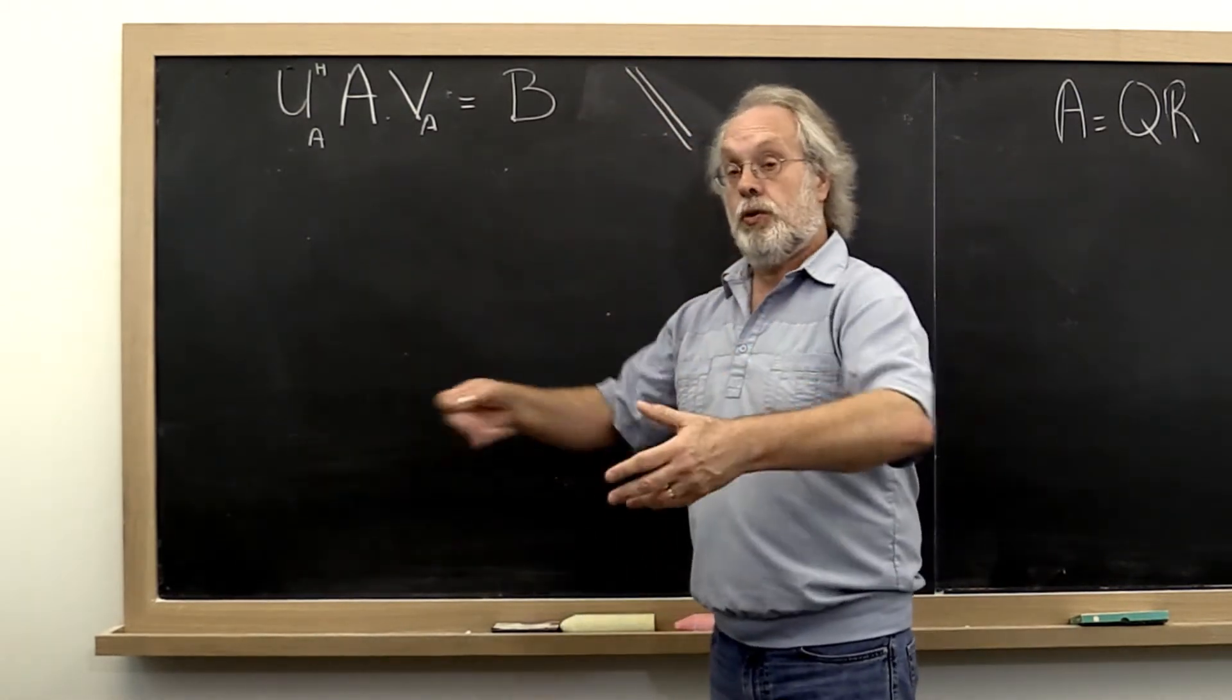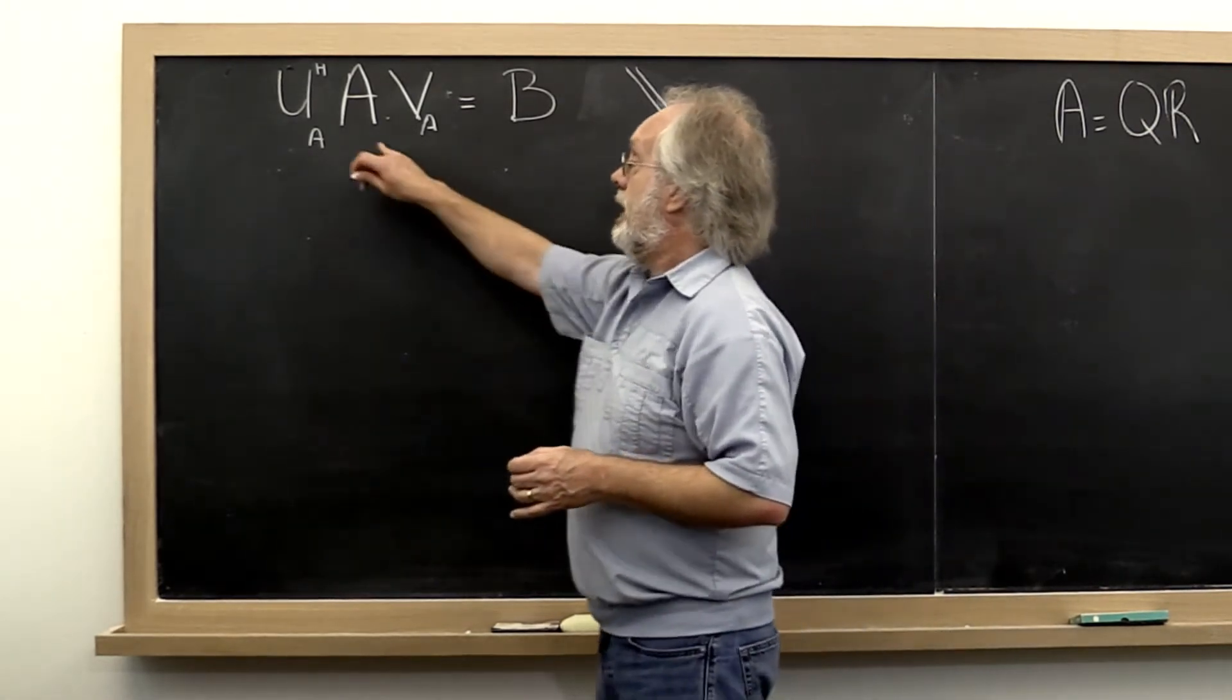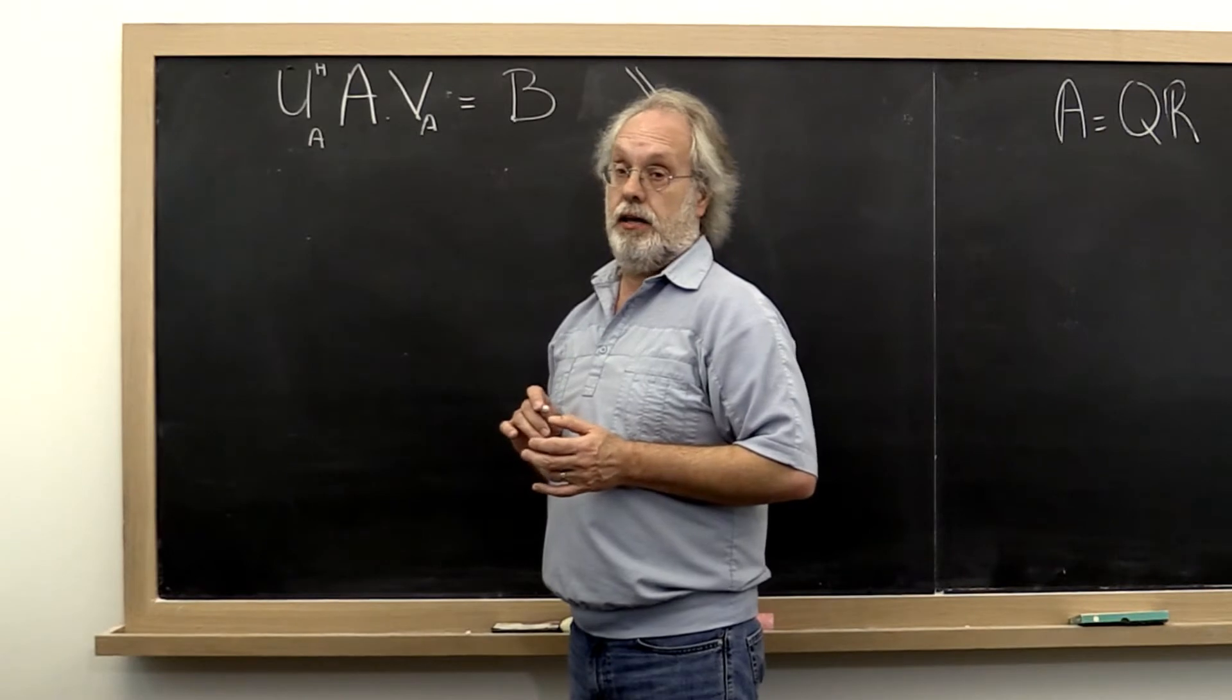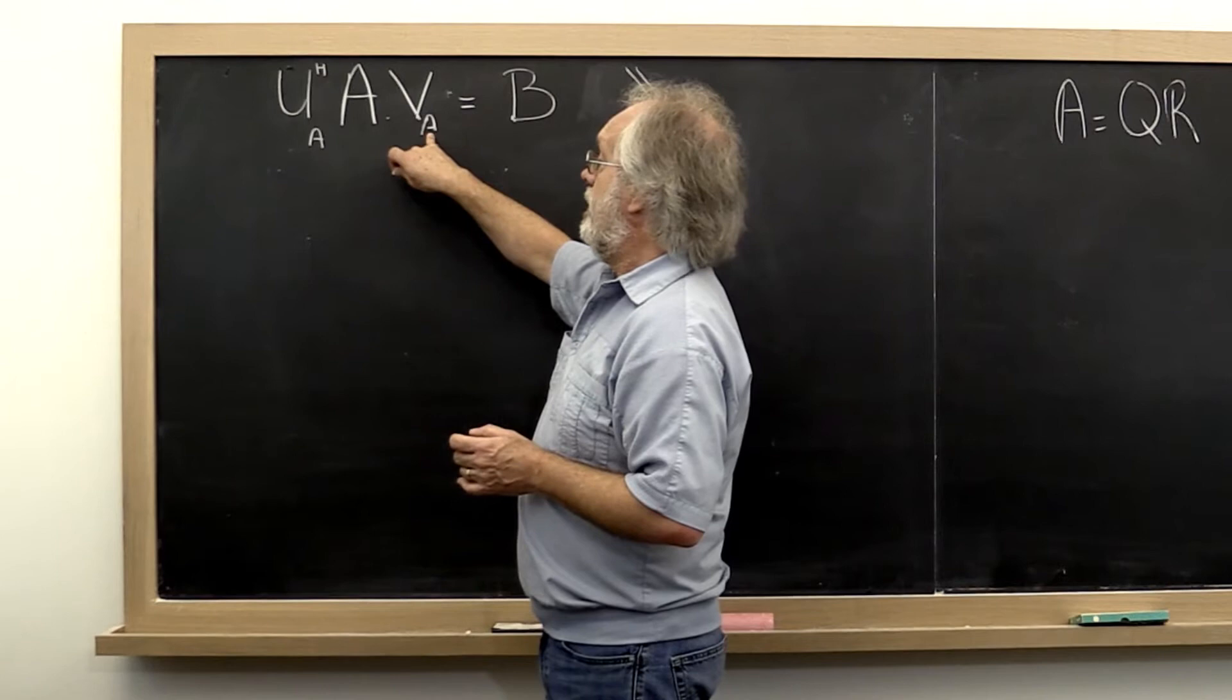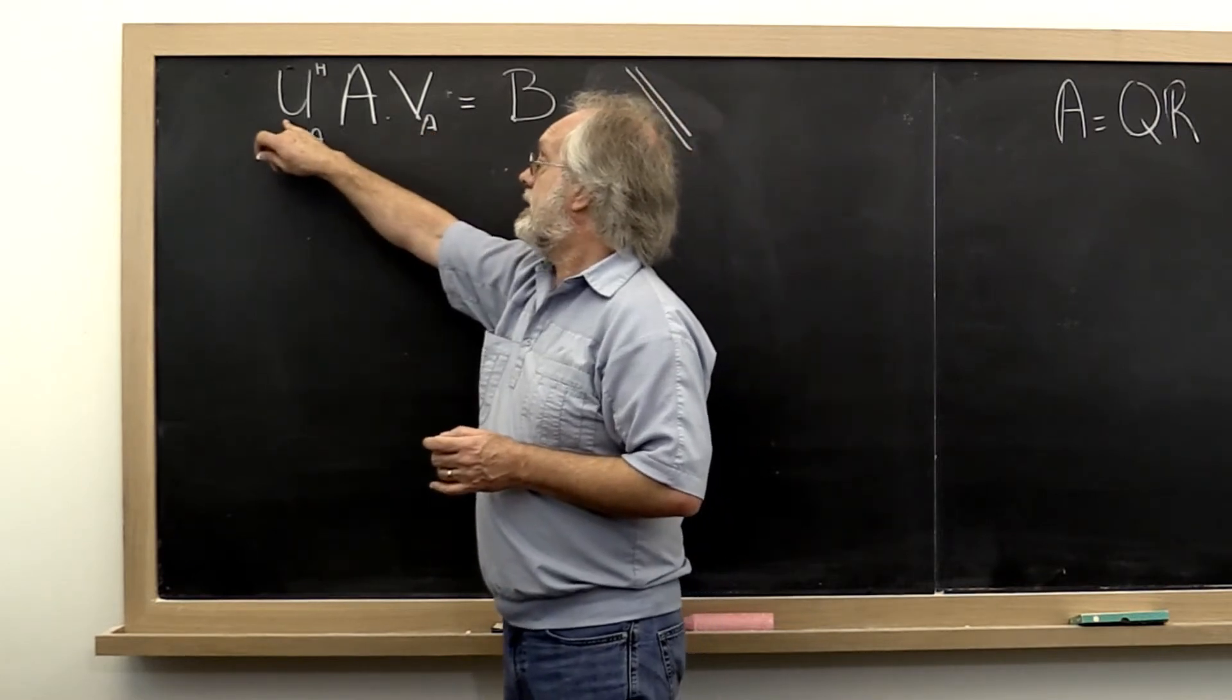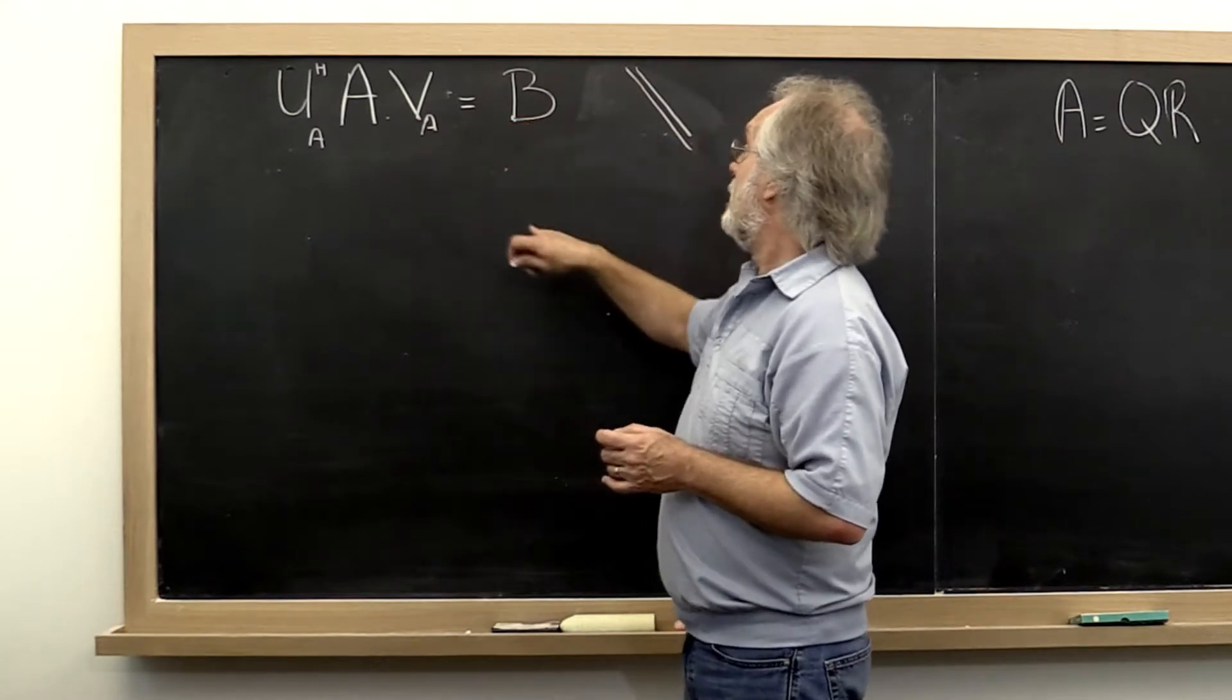The next step towards computing the singular value decomposition now is to say, okay, I've got this square matrix A. I'm going to find unitary matrices Ua and Va in such a way that Ua Hermitian A Va is a bidiagonal matrix.